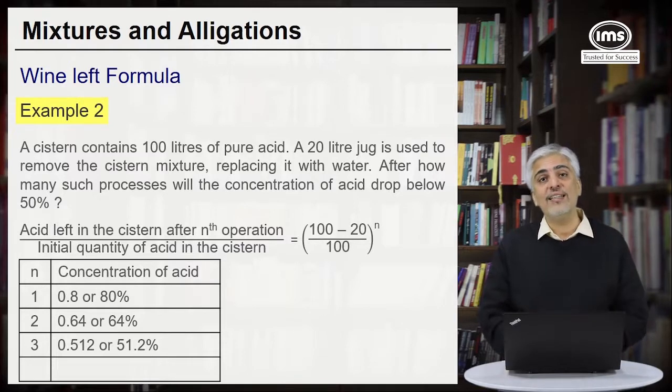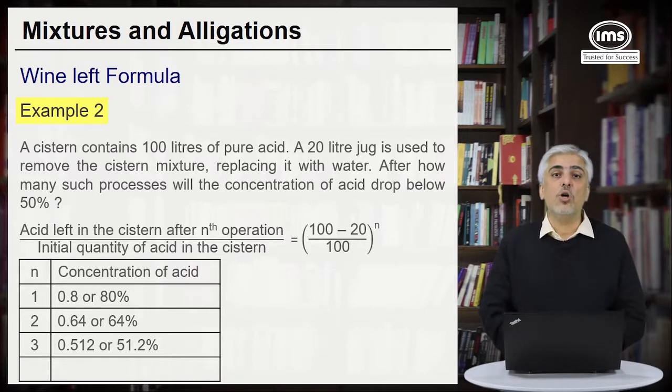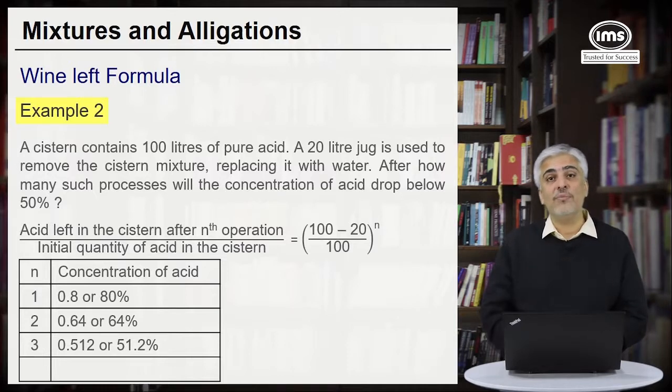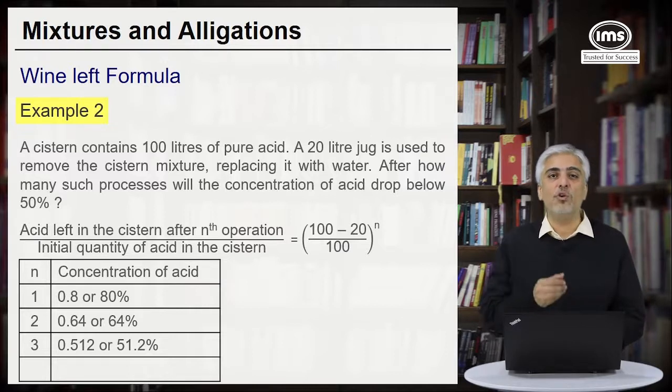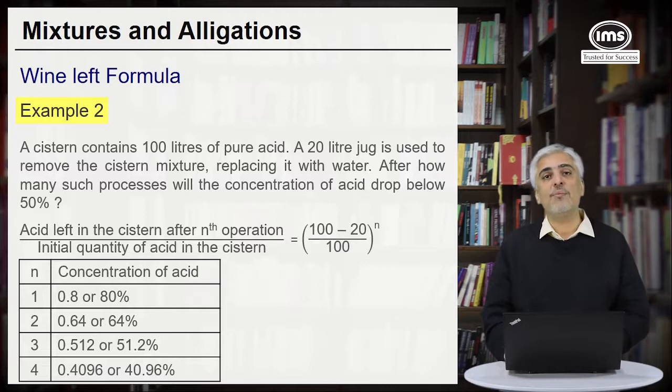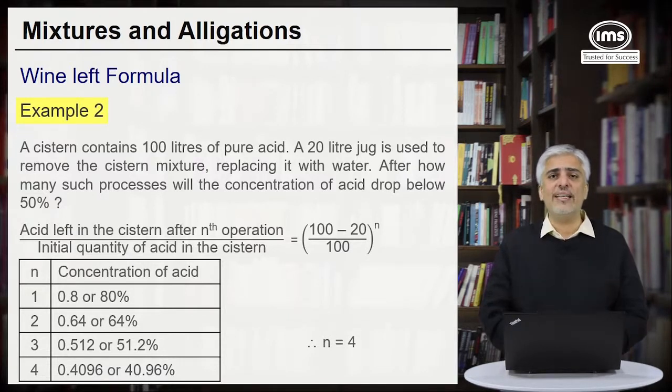So we have noticed that in three processes when the process was repeated three times the concentration of the acid has dropped to 51.2 percent. So if I do it one more time it's very obvious it will go down below 50 percent. So my answer is definitely 4 but let's see exactly what will be the answer. So when you do it fourth time the percentage will become 40.96, that is below 50 and hence the answer will be n is equal to 4. So this is a slightly complicated example of a wine left formula.